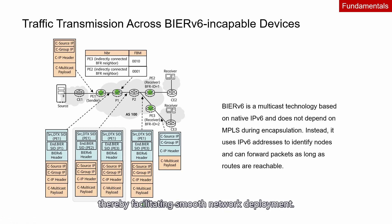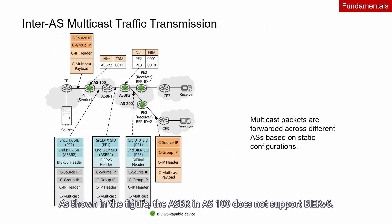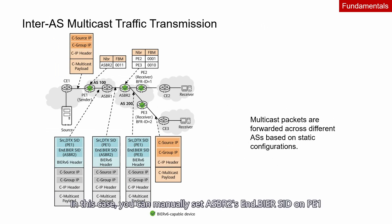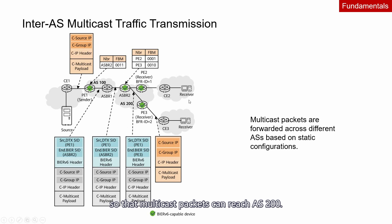BIERv6 allows multicast packets to traverse different ASs based on static configurations. As shown in this figure, the ASBR in AS100 does not support BIERv6, while all devices in AS200 support BIERv6. In this case, you can manually set ASBR2's BIER SID on PE1 as the next hop for multicast packets to be sent to nodes with BFR-ID1 and BFR-ID2, so that the multicast packets can reach AS200.